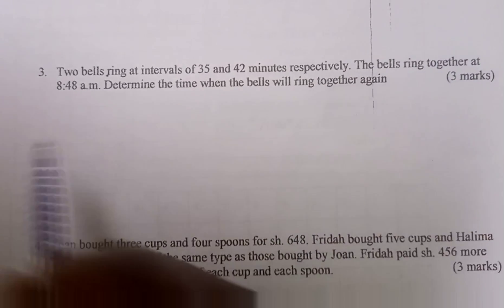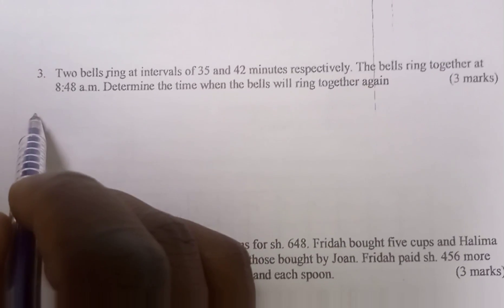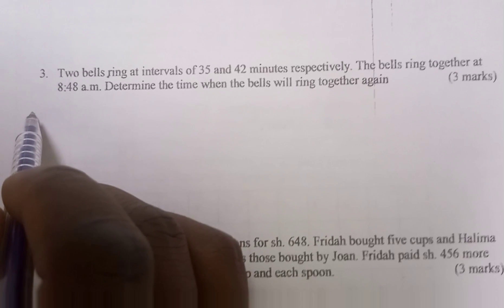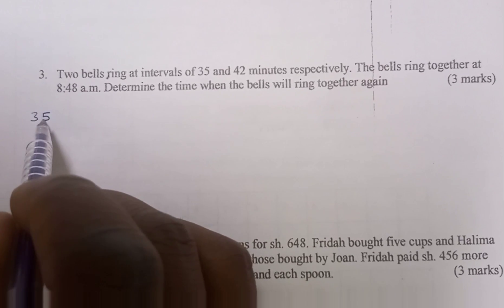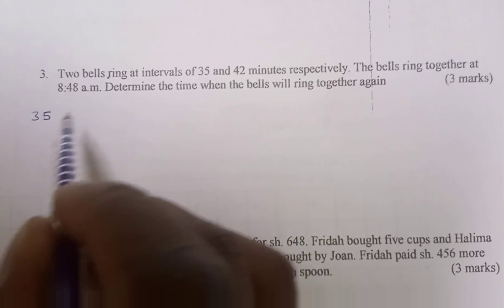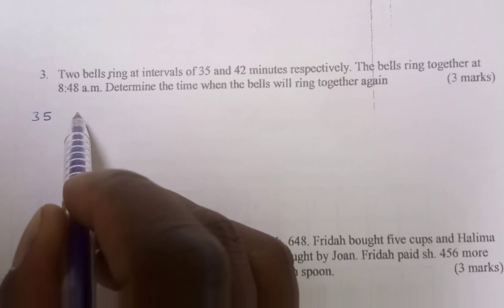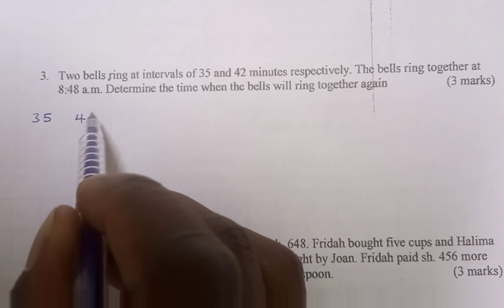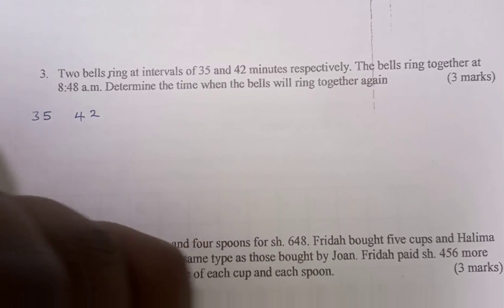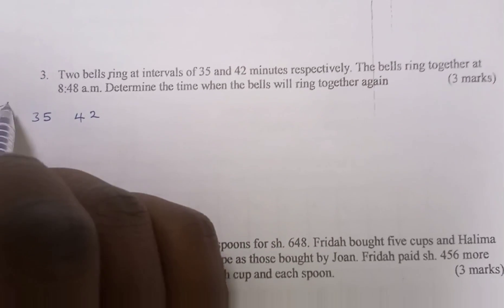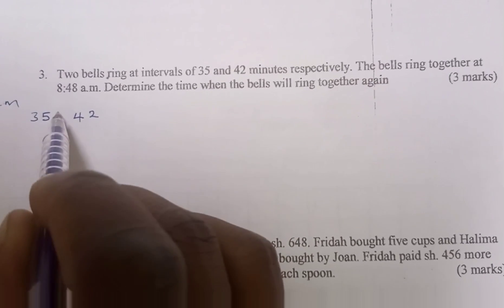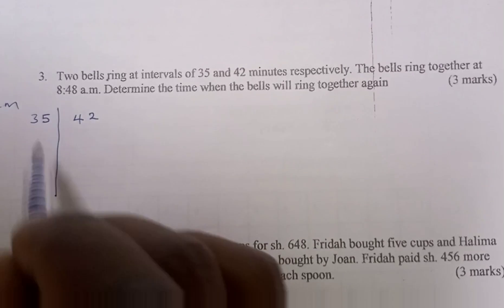The next question: two bells ring at intervals of 35 and 42 minutes respectively. The bells ring together at 8:48 AM. Determine the time they ring together next. Again, this is an application of LCM, so we are going to find the LCM of the two given numbers, 35 and 42.